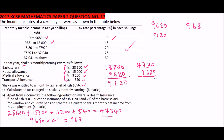The second bracket amount is nine thousand one hundred and twenty shillings, charged at fifteen percent. Fifteen percent of nine thousand one hundred and twenty shillings gives one thousand three hundred and sixty-eight shillings as the tax for the second bracket.